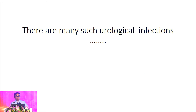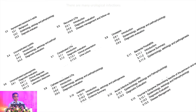There are many such urological infections, varying from asymptomatic bacteriuria, uncomplicated cystitis to complicated cystitis, urosepsis, catheter-related UTI, and a whole lot of things including genitourinary tuberculosis.